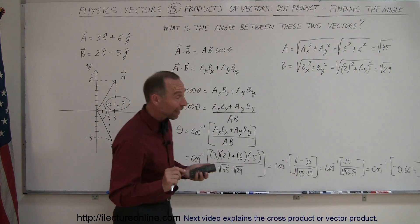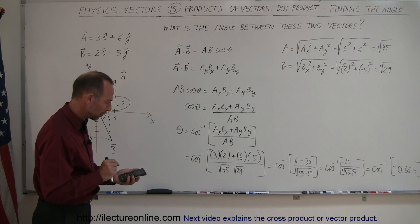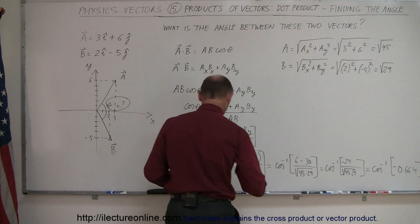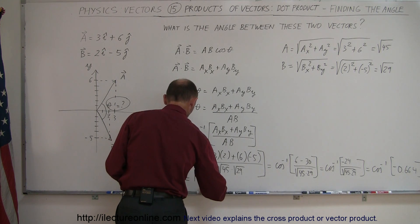And then I take the arc cosine of that, let's see what we get. So take the arc cosine, and I get 131.6 degrees. So this is equal to theta equal to 131.6 degrees. And there is our answer.